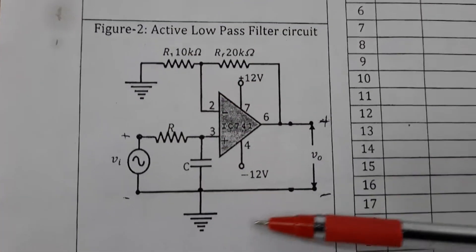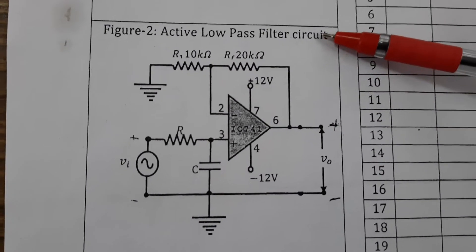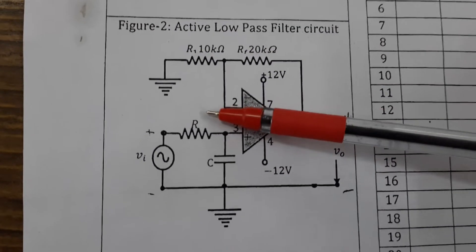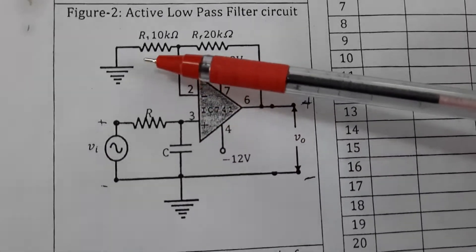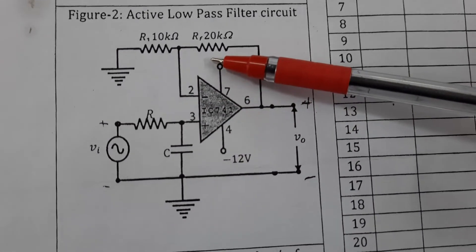This is the schematic diagram of the active low pass filter circuit that we are using. The values of R and C will decide the cut-off frequency. The values of Ri and Rf will decide the gain.